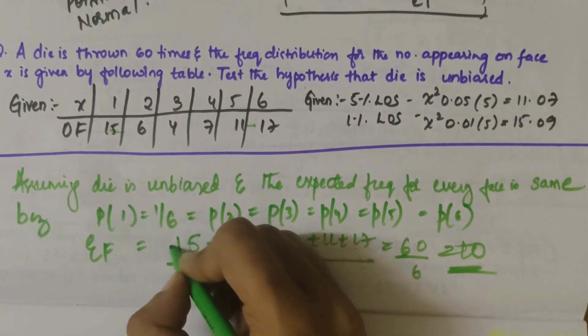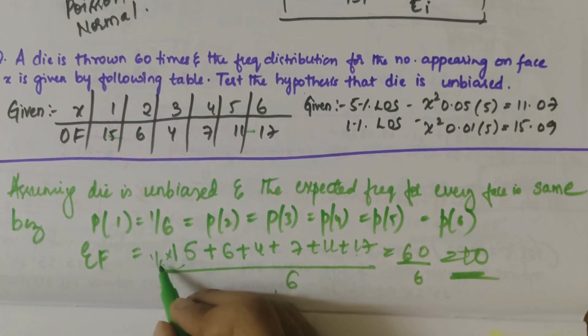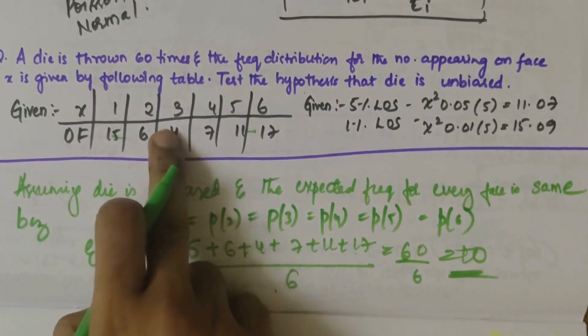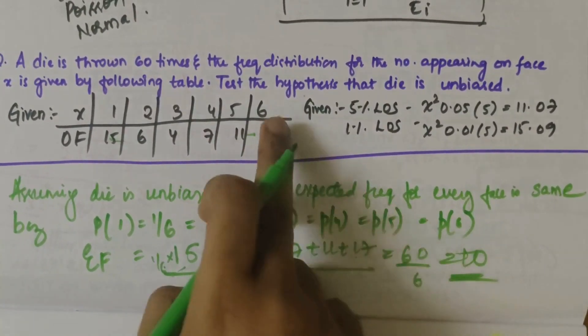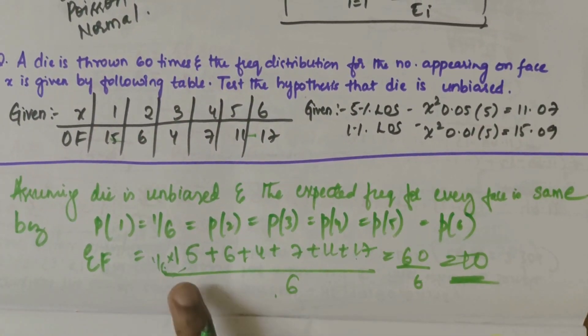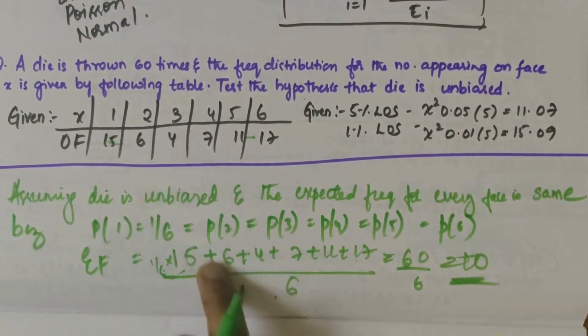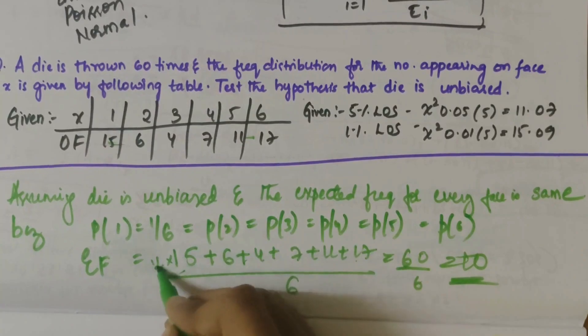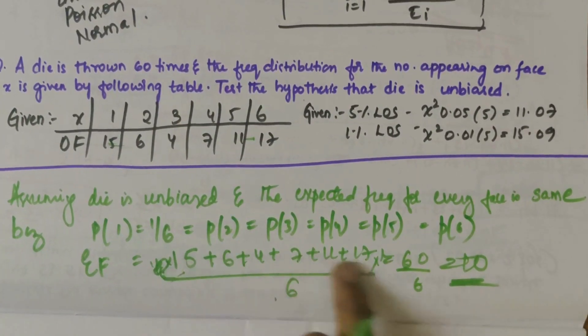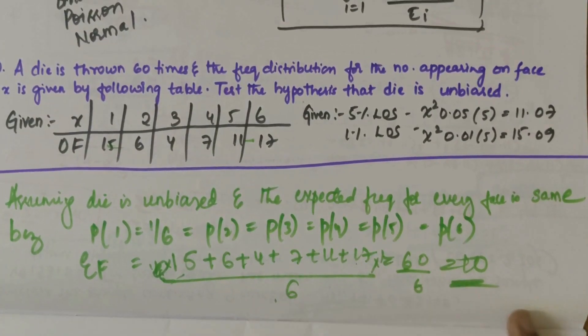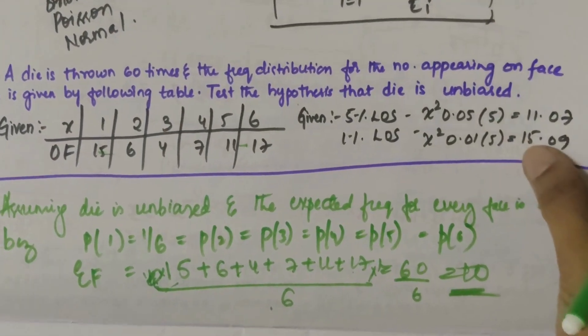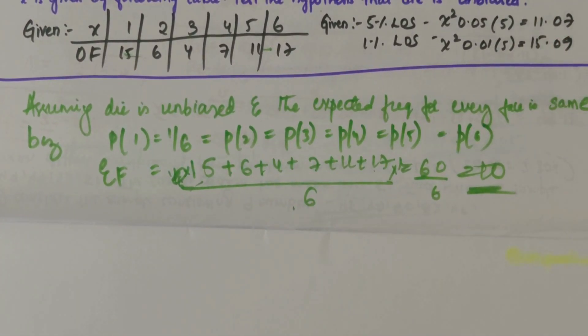Writing the expected frequency here, it can be written as 1 by 6 common for all of these, because 15 into 1 by 6 plus 6 into 1 by 6, 4 into 1 by 6, 7 into 1 by 6, 11 into 1 by 6, and 17 into 1 by 6. Adding up all these, you get the expected frequency. When you add all this, you get 60, and when you divide it by 6, you get 10. So we have got the expected frequency and we have the observed frequency. Let's compute a table now.